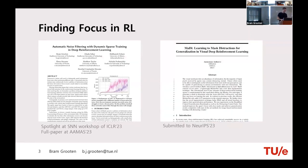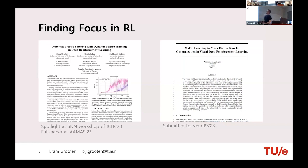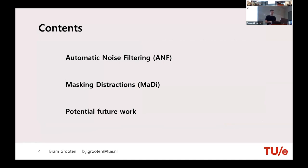Today we'll talk about two papers. One was published as a full paper at AMOS this year — automatic noise filtering with dynamic sparse training in deep RL — and we also went to the sparse neural networks workshop at ICLR with that. The latest work is learning to mask distractions for generalization in visual deep reinforcement learning, which is under submission at NeurIPS at the moment. We'll go into ANF first, then MaDi, and at the end I'll talk briefly about potential future work.